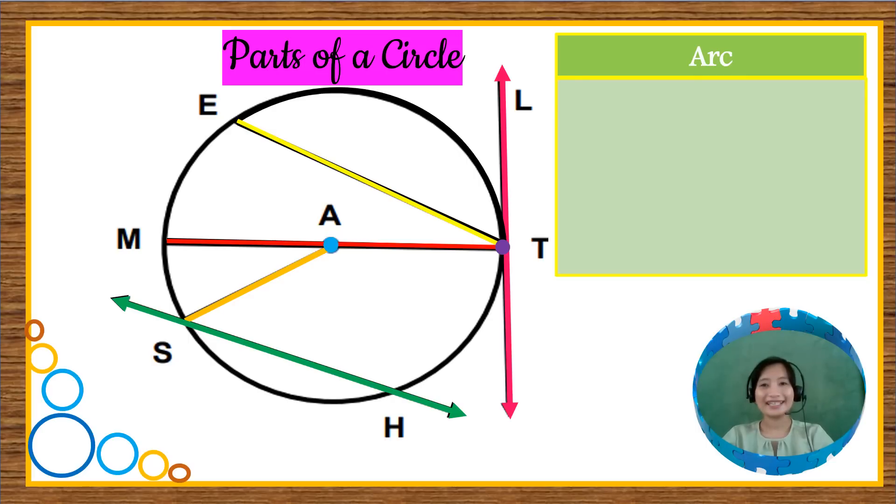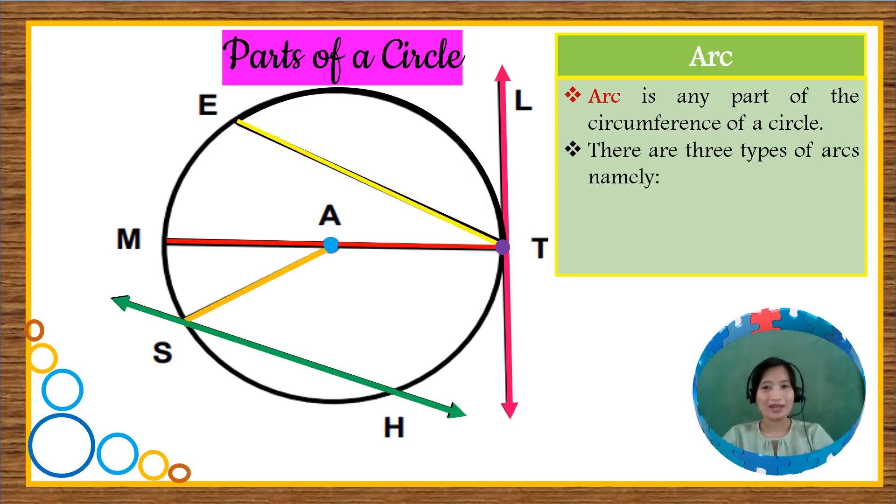Last but not the least is an arc. An arc is any part of a circumference or any part of the circumference of a circle. There are three types of arcs, namely the minor arc, semi-circle, and major arc.